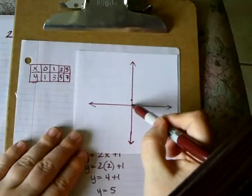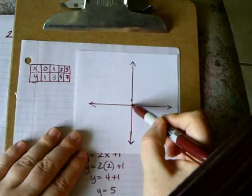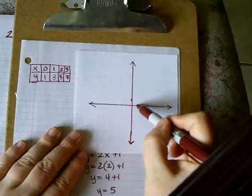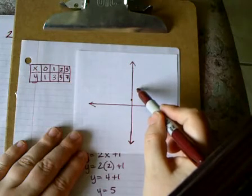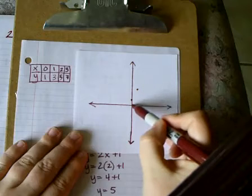Going back to 0, 0, I graph my next pair. My next pair is over 1 and up 3. 1, 2, 3. Start again at 0, 0.